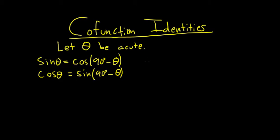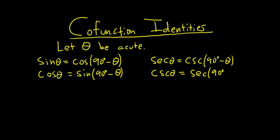You can do the same thing with secant and cosecant. The secant of theta is equal to the cosecant of 90 degrees minus theta. Likewise, the cosecant of theta is equal to the secant of 90 degrees minus theta.